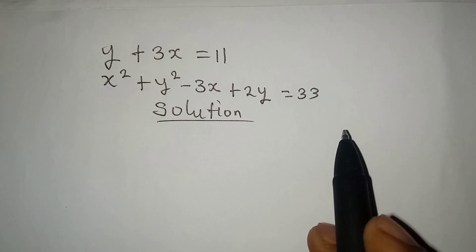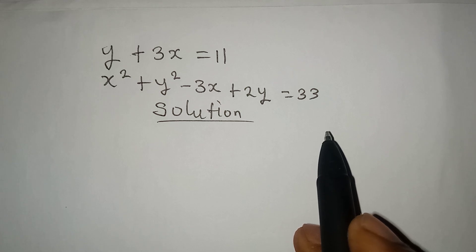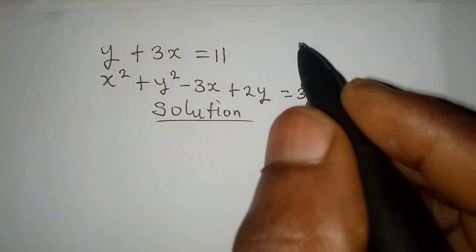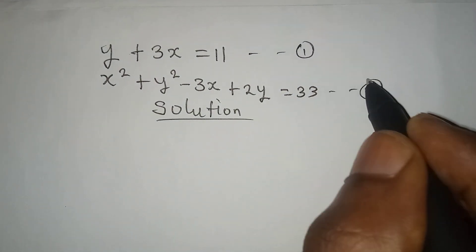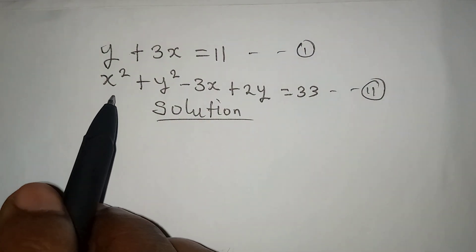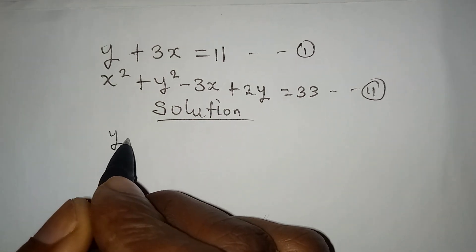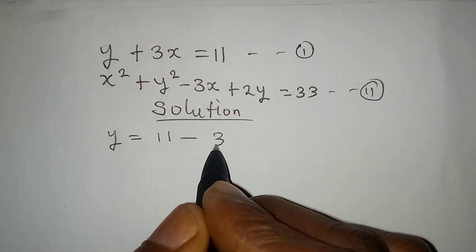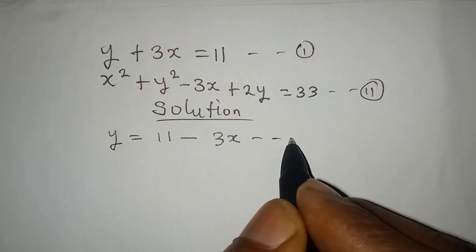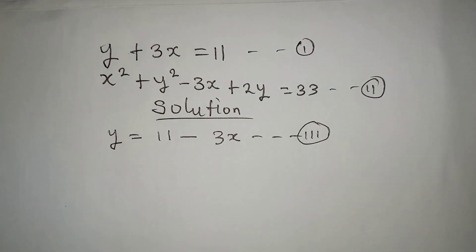So we want to solve this and it's simple. Here is what we are going to do. This is equation 1 and this is equation 2. From equation 1, make y the subject so that y will be equal to 11 minus 3x. We can now call this equation 3 because we are coming back to pick this.